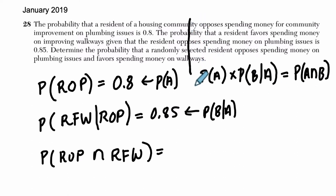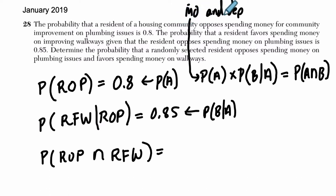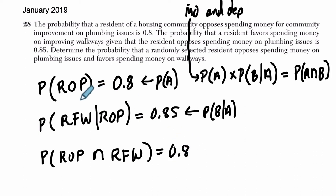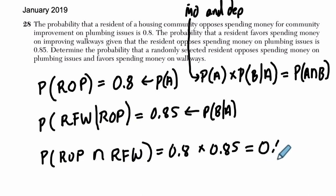This is true whether the events are independent or not — independent events where one event occurring does not impact the probability of another, or dependent where one event occurring first will impact the probability of the second happening. So either way, if you know the probability of A and multiply it by the probability of B given that A has happened first, you get their intersection. All of this comes down to just multiplying: 0.8, the probability of opposing plumbing, times 0.85, that they favor walkways given that they oppose plumbing. That will be the intersection that both happen. Pull a calculator — that's about 0.68.